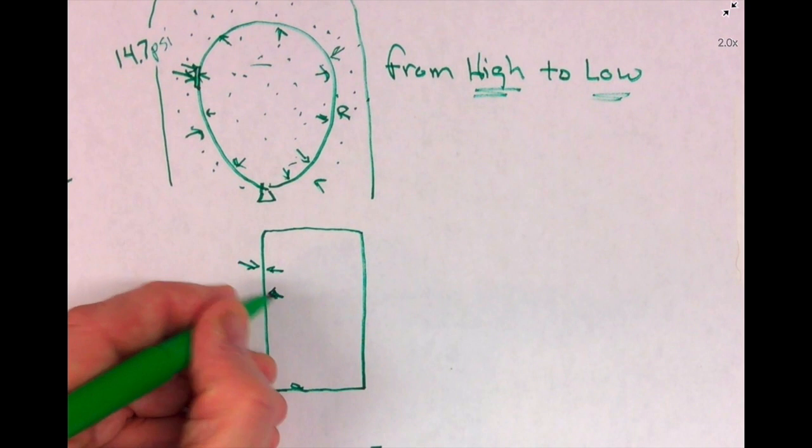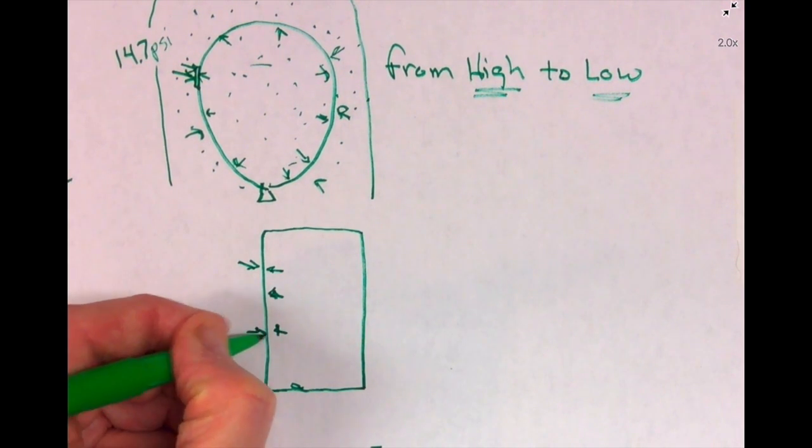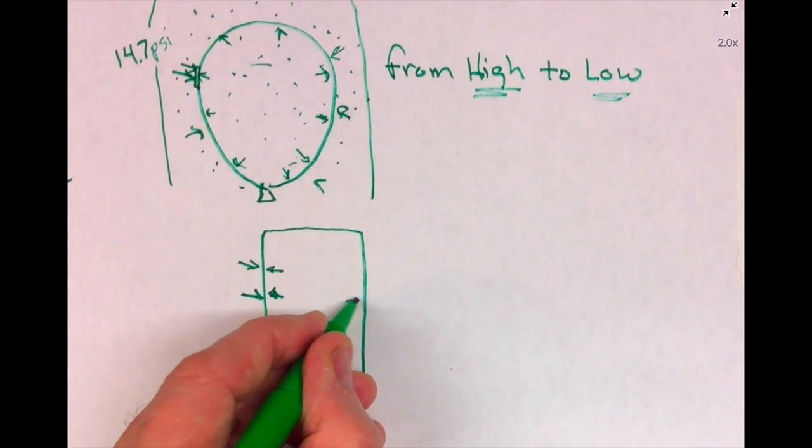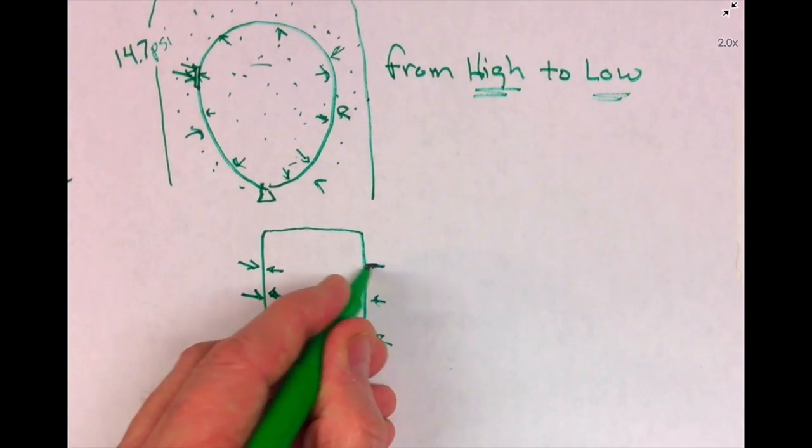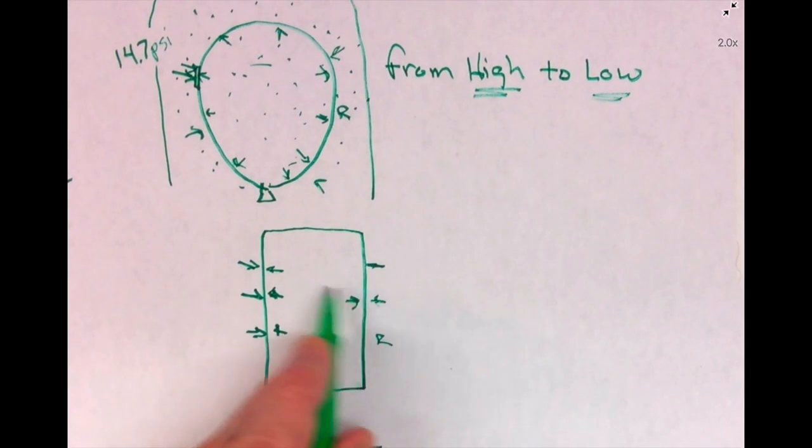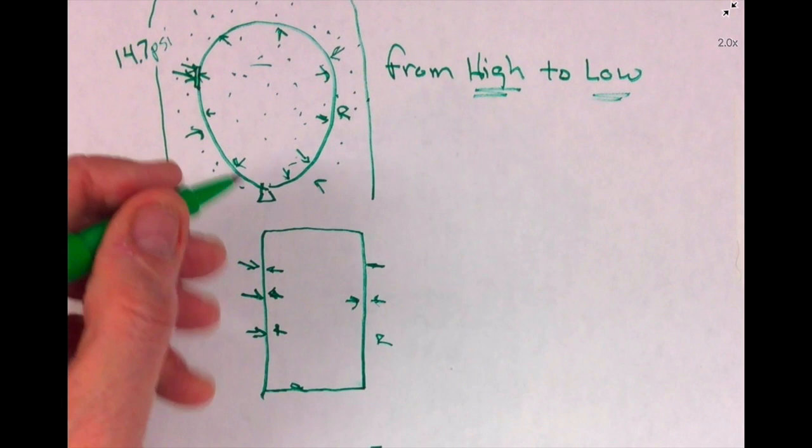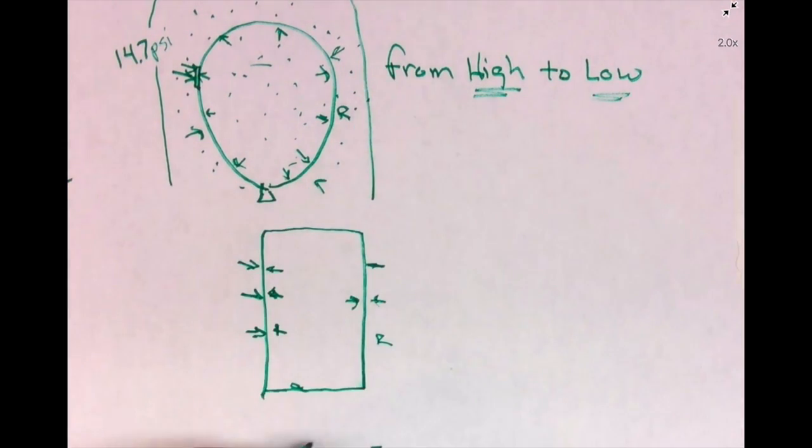It's got air on the inside and air on the outside, and all the air molecules are bumping against the surface of it, and they kind of balance each other out. You don't really notice it because it's got 14.7 that way and 14.7 that way. But here's what happens if you heat it up on a fire and you put a little bit of water in there...